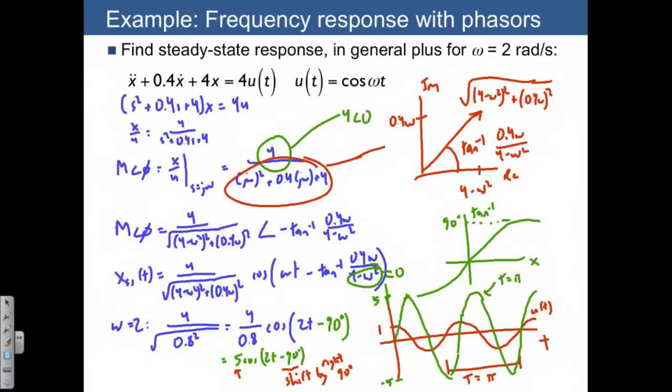And then if we wanted to talk about the time shift, this would be 90 degrees or we can also say pi over 2. So the effect of this differential equation is it takes an input sinusoid, it amplifies it by a factor of 5, and then it delays it by 90 degrees.